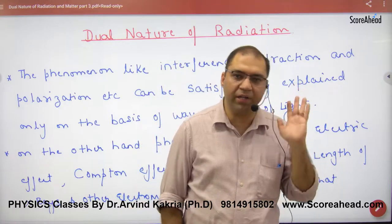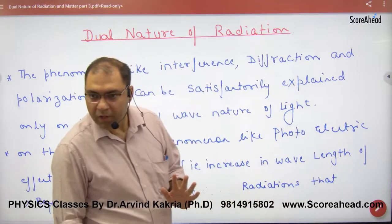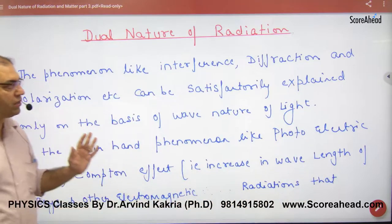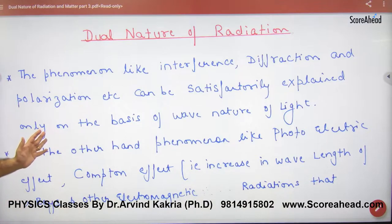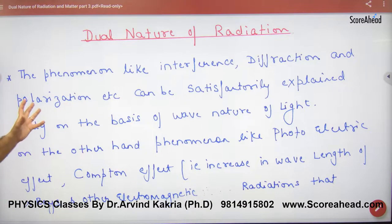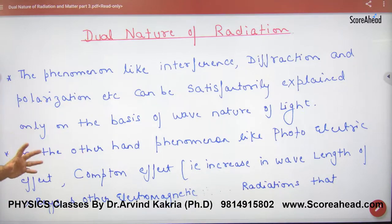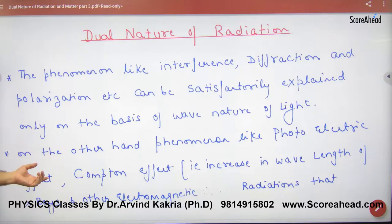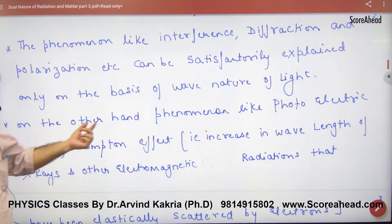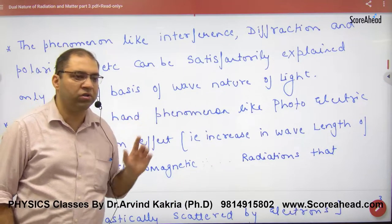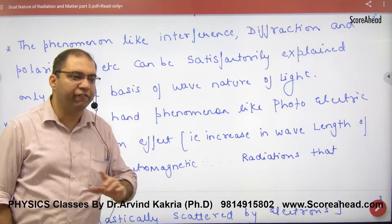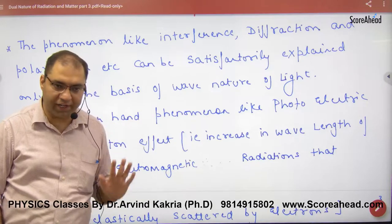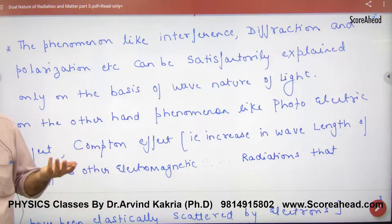So here we have the story in which he told us that some phenomena — like interference, diffraction, and polarization — can be explained only on the basis of the wave nature of light. So wave nature explains them.